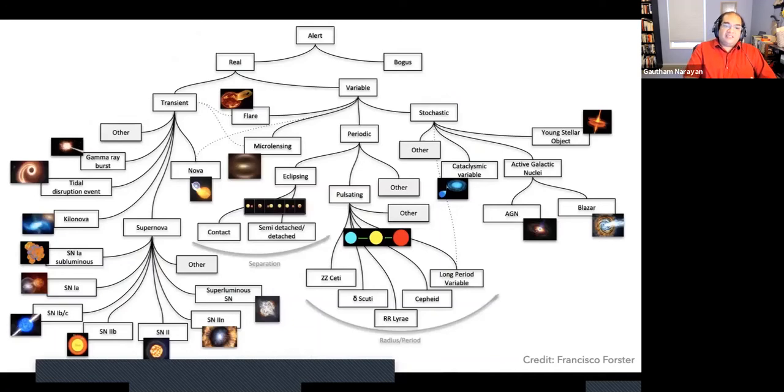The other challenge that we have is the time domain and transient sky is extremely varied. People are interested in different sorts of objects. I am personally interested in things like supernovae, particularly type 1a supernovae, to measure the expansion history of the universe. I'm also interested in things like kilonovae. But my colleague, Professor Decker French, who's just down the corridor from me, works on tidal disruption events. And there are folks here who work on things like active galactic nuclei and are interested in finding things like changing AGN. So we have very different interests for what we want out of the alert stream from LSST.